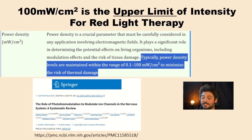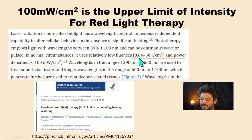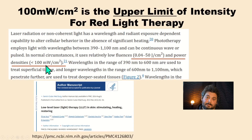So a lot of the parameters are specifically chosen to minimize the thermal effects. Another article says in normal circumstances it uses relatively low fluences of 0.04 up to 50 joules per centimeter squared and power densities less than 100 milliwatts per centimeter squared.